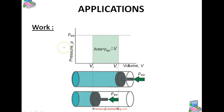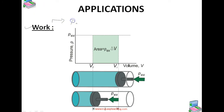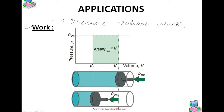First, let us consider work. We will concentrate on the nature of work a system can do. We will consider only mechanical work, that is pressure-volume work. For understanding pressure-volume work, let us consider a cylinder which contains one mole of an ideal gas fitted with a frictionless piston.